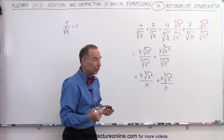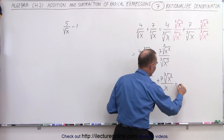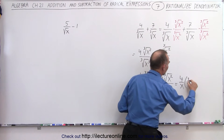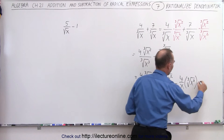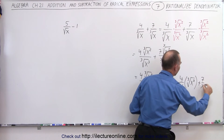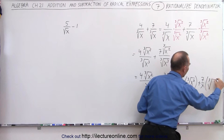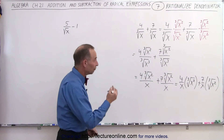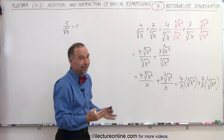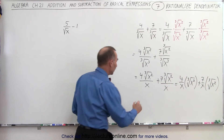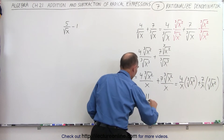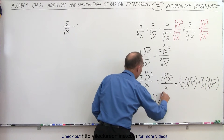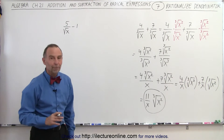Essentially, you can think of it as follows: this is equal to 4 over x times the cube root of x squared, plus 7 over x times the cube root of x squared. Notice you can simply add those together — 4 over x plus 7 over x — since the denominators are the same, that is simply equal to 11 over x times the cube root of x squared, and that would be the final simplified form.